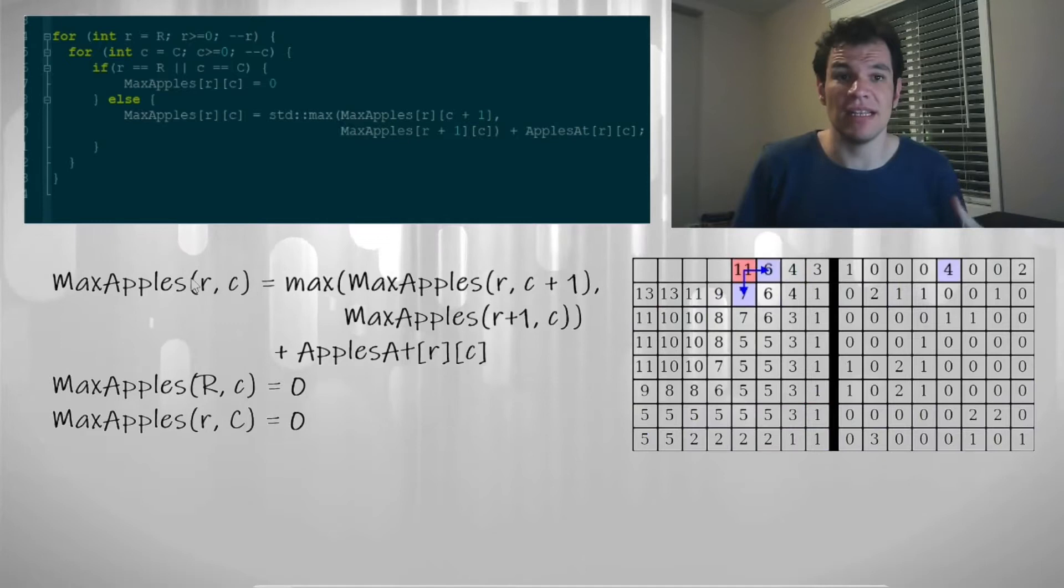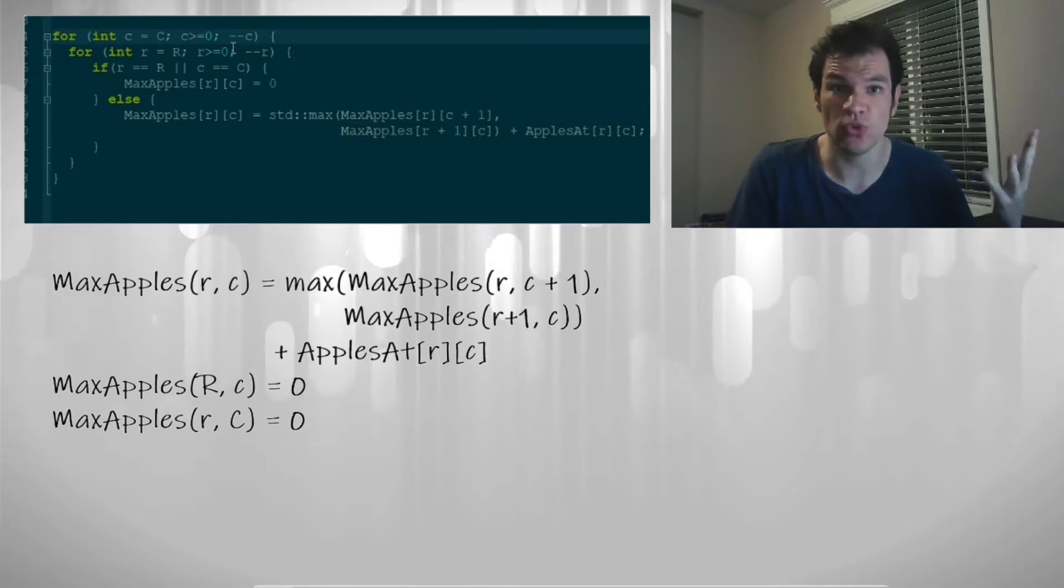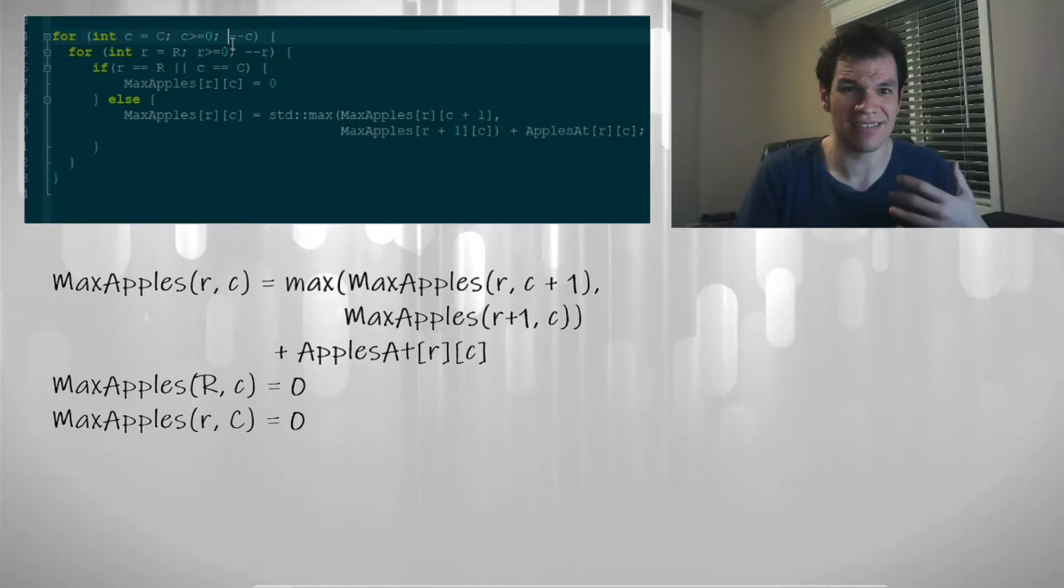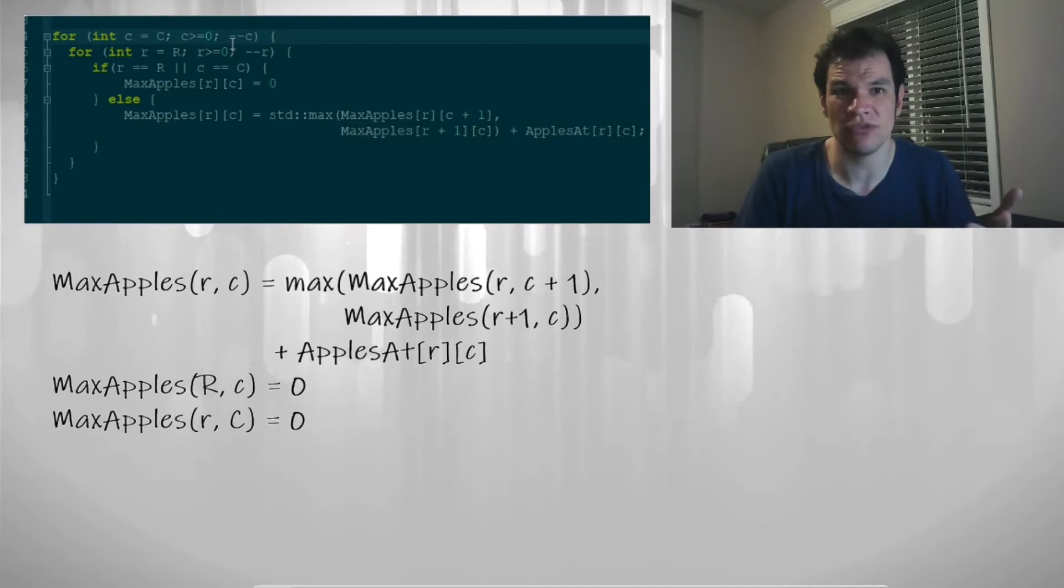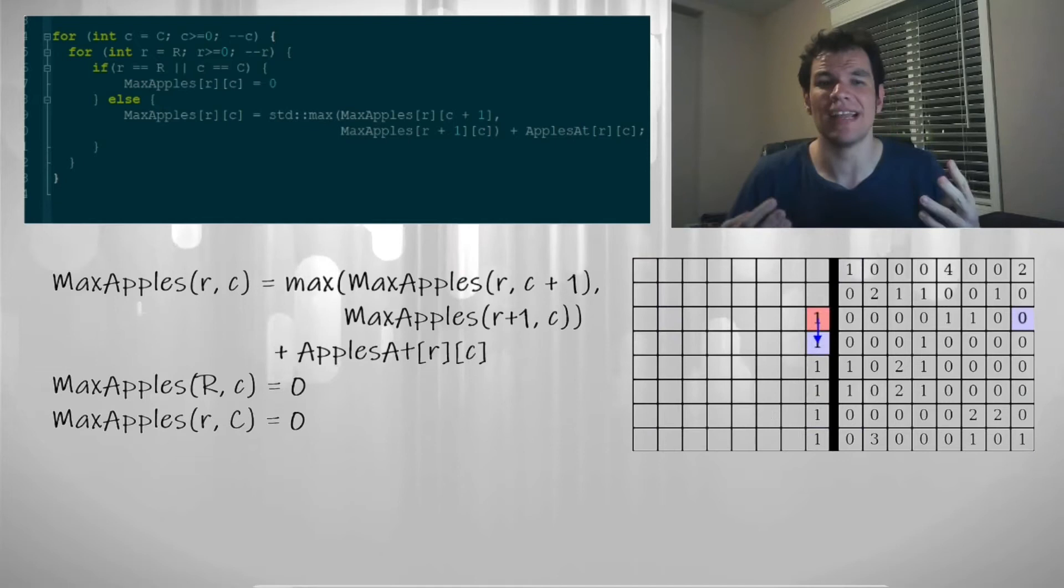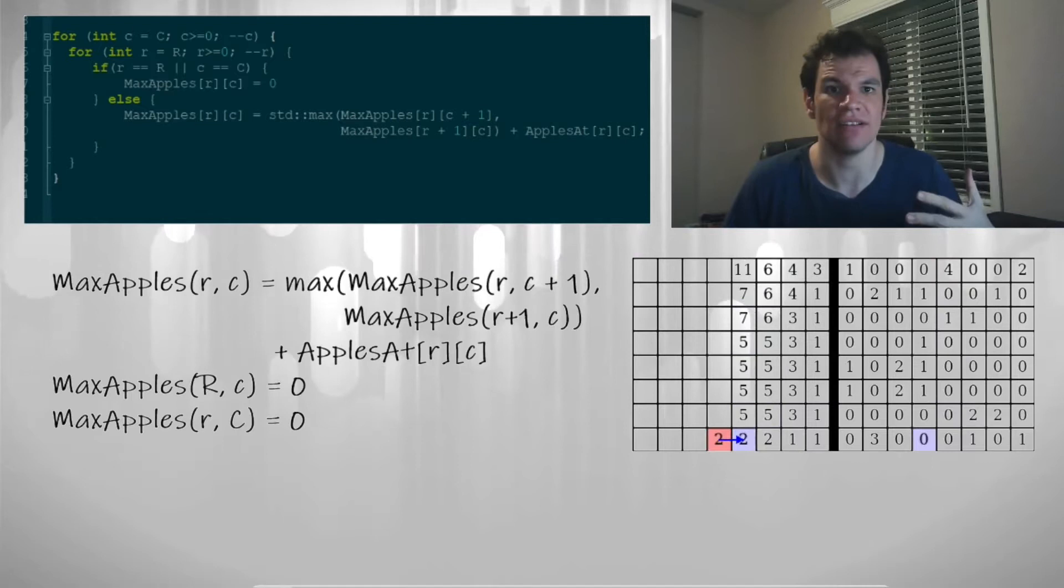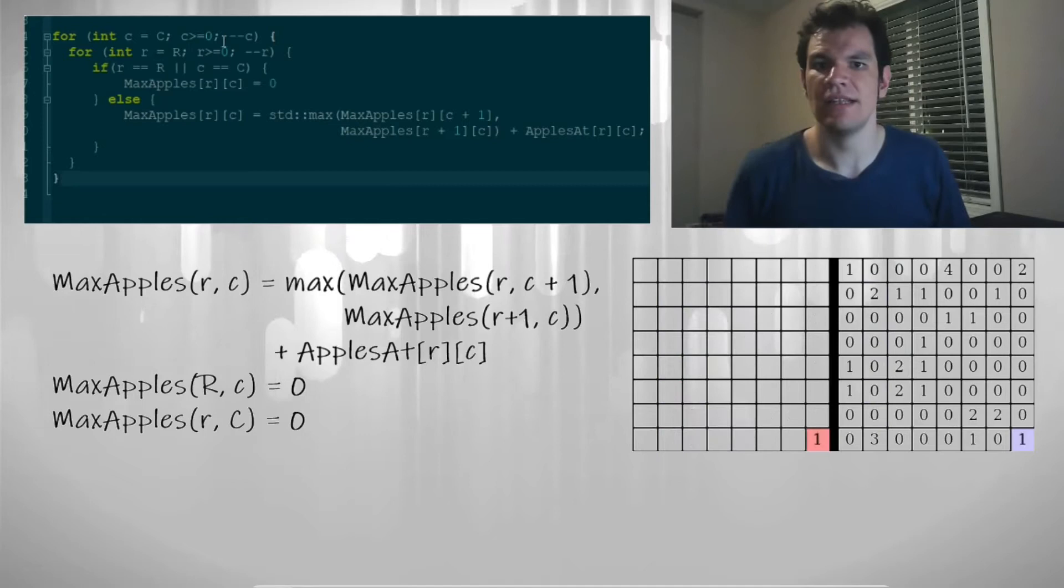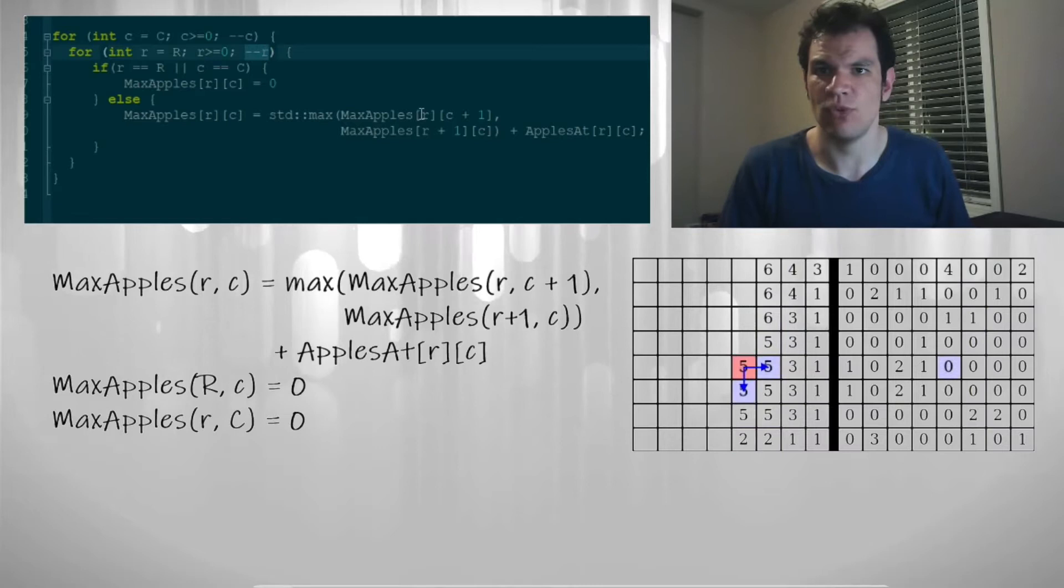Now think what would happen if we swap the order of these two lines. Does this still work or not? Try to answer that in just very few seconds. And the answer is that it still works for the same exact reason that it worked previously. That is, these indexes are decreasing and these ones are bigger than the ones on this side.